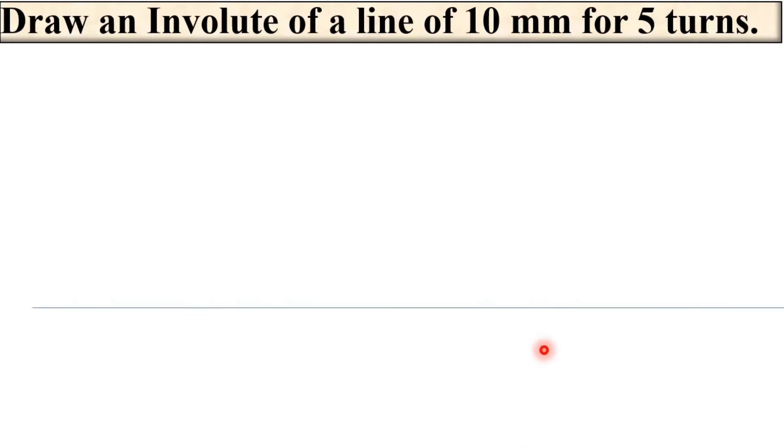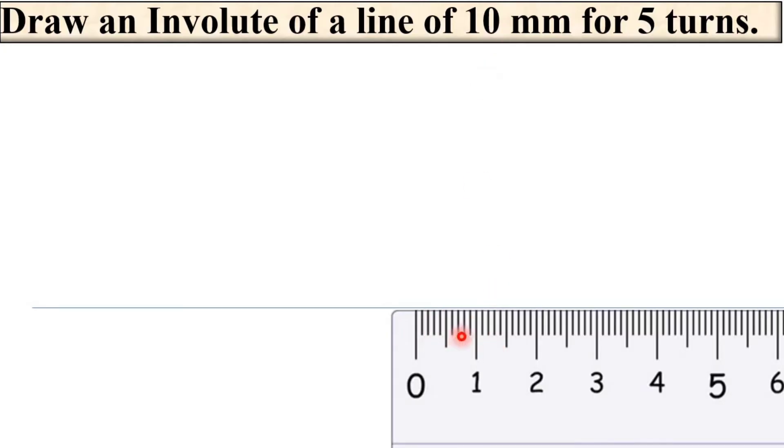So first of all draw the horizontal reference line on which draw the 10 mm line. So here I am going to draw the 10 mm line. Give the name as AB.